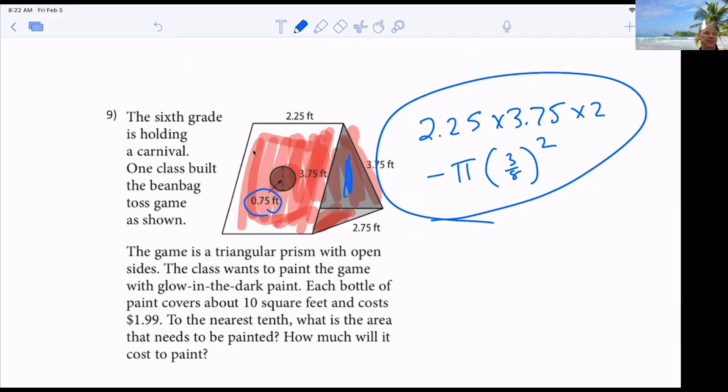Why do you do times 3 over 8 instead of 3 over 4? 3 fourths is the diameter, right? Yeah. Half of 3 fourths is 3 eighths. Oh, yeah. Good? All right.